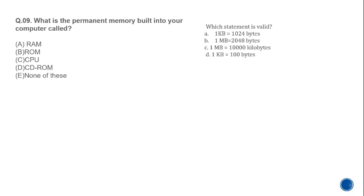MCQ 9: What is the permanent memory built into your computer called? Permanent memory that is built in stores data permanently — that is ROM, not RAM. The correct answer is B: ROM.